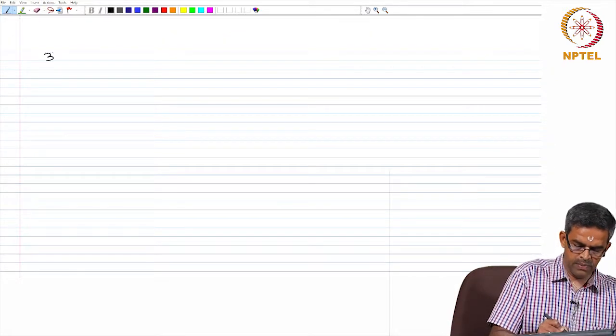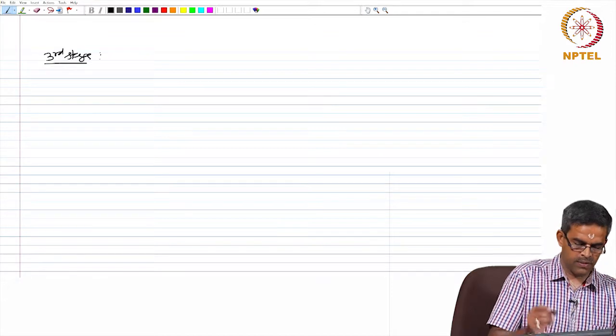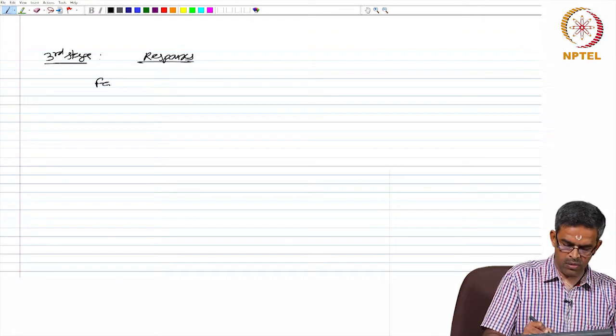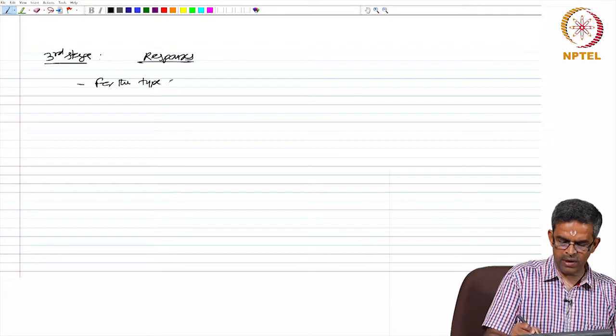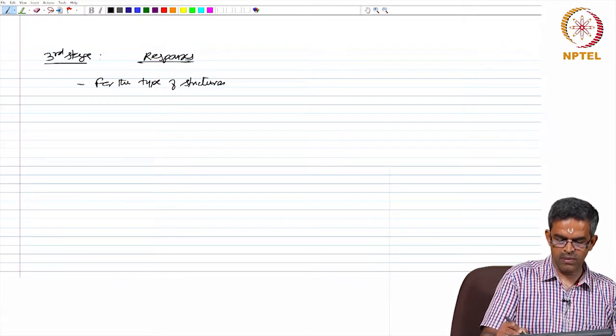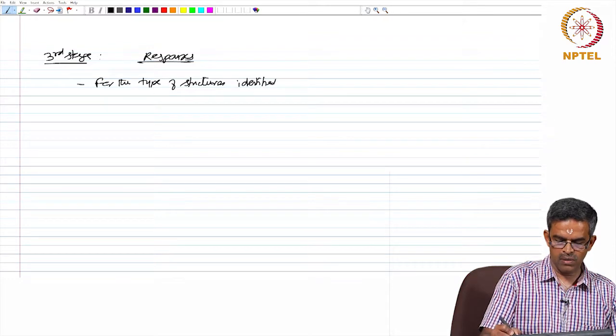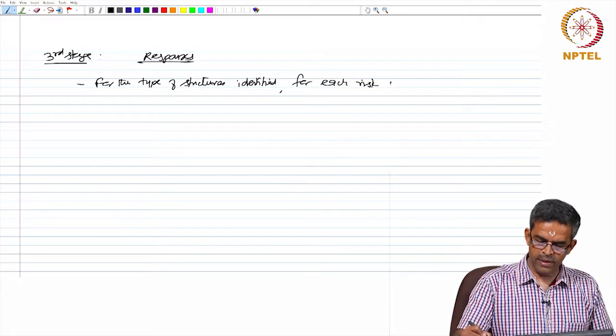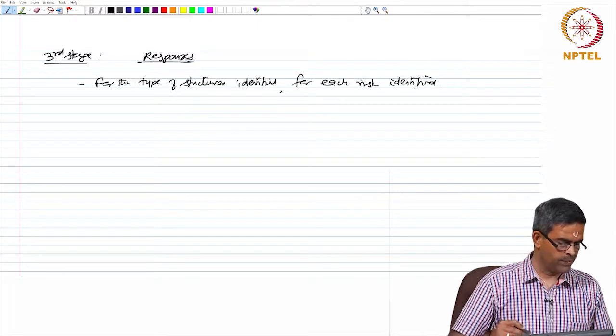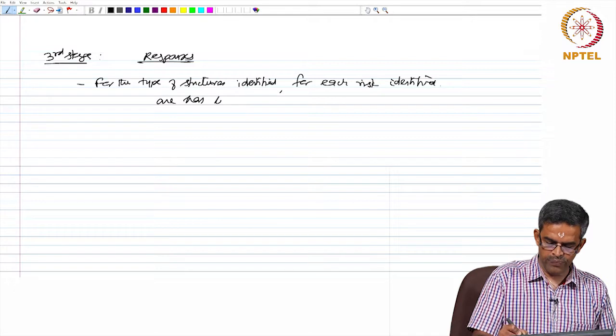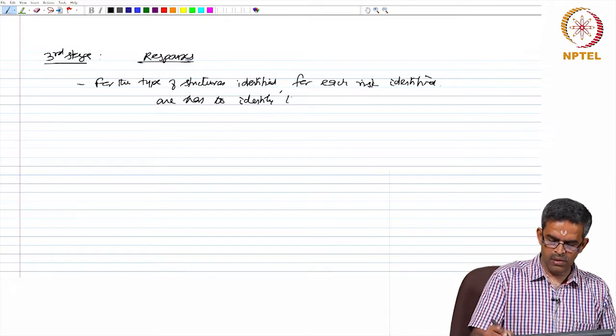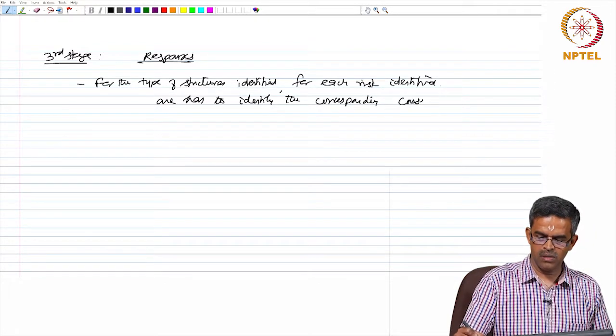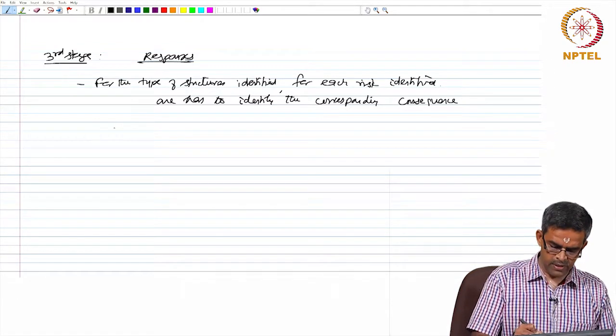The third stage is to measure the responses for the type of structures identified. For each risk identified in the previous step, one has to identify the corresponding consequence.